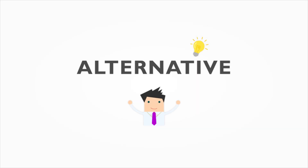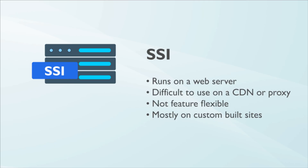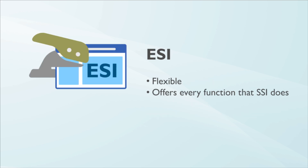The alternatives to ESI are Ajax and SSI. SSI runs on a web server, making it difficult to use on a CDN or a proxy. It's not a flexible feature and is used most commonly on custom-built sites. ESI, on the other hand, is flexible and offers every function that SSI does, making it the clear choice.